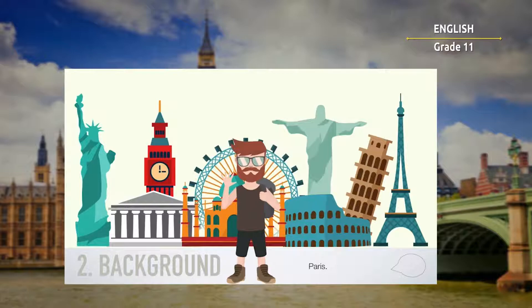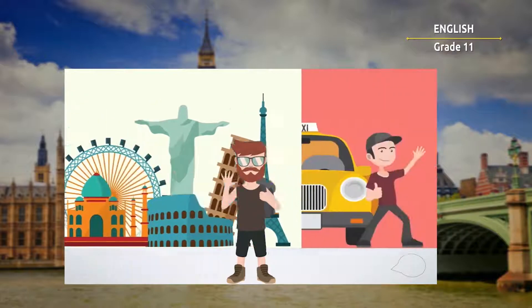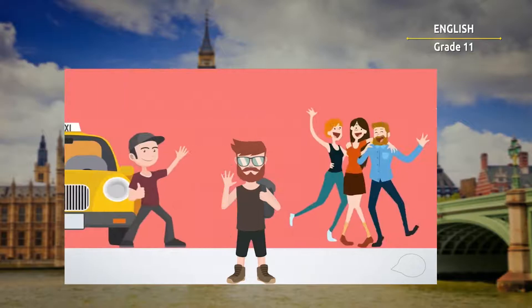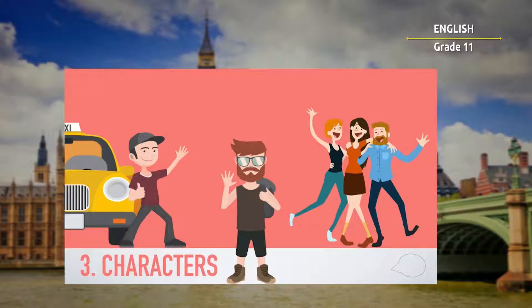The third step to telling a story in English is to decide the characters. In other words, deciding who will be the focus of your story. For our example, the characters are John, his friends, and the taxi driver they met in Paris.